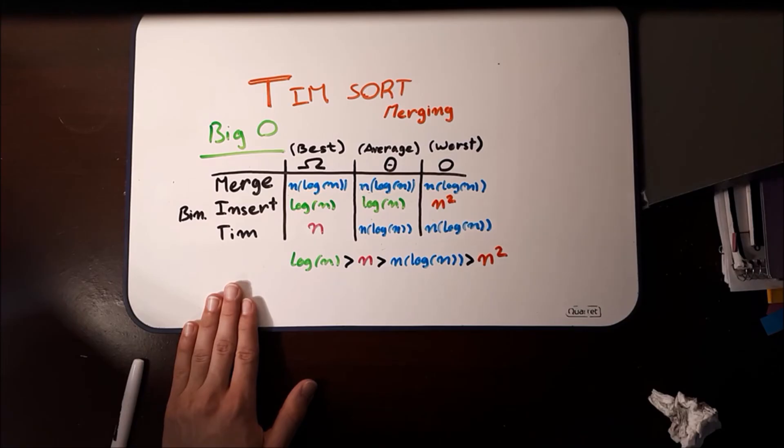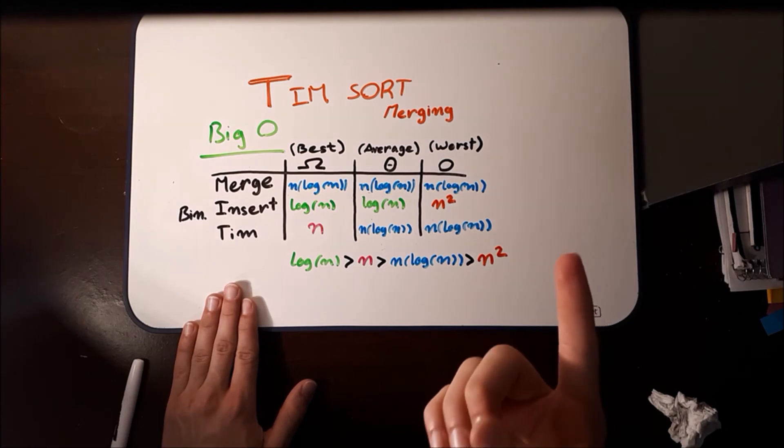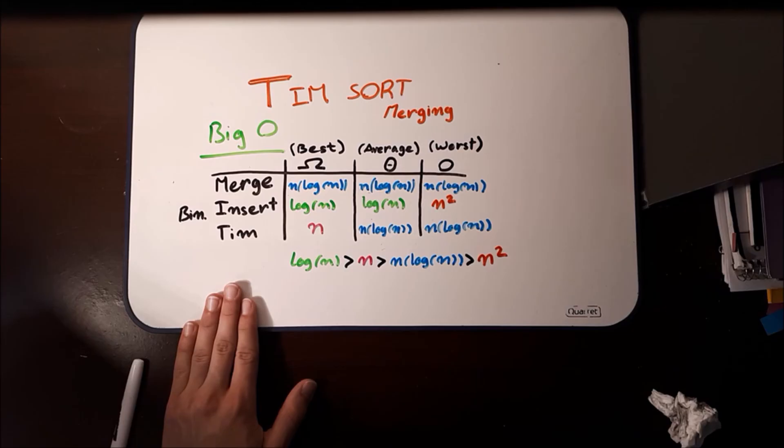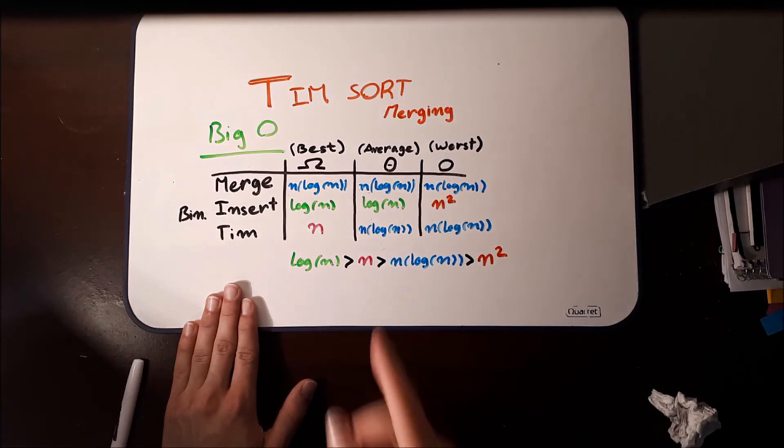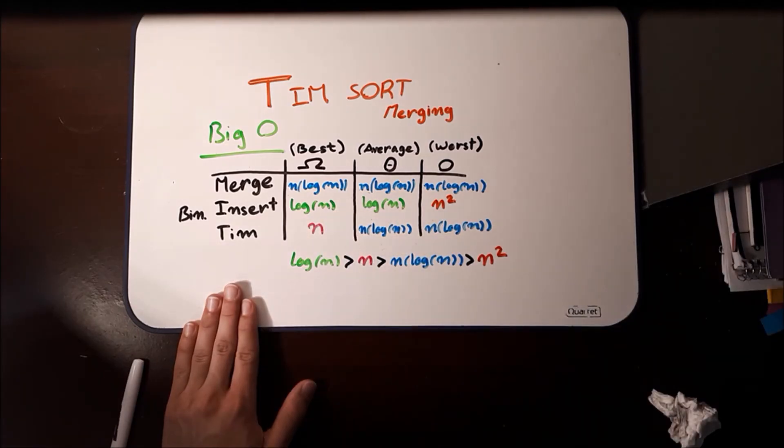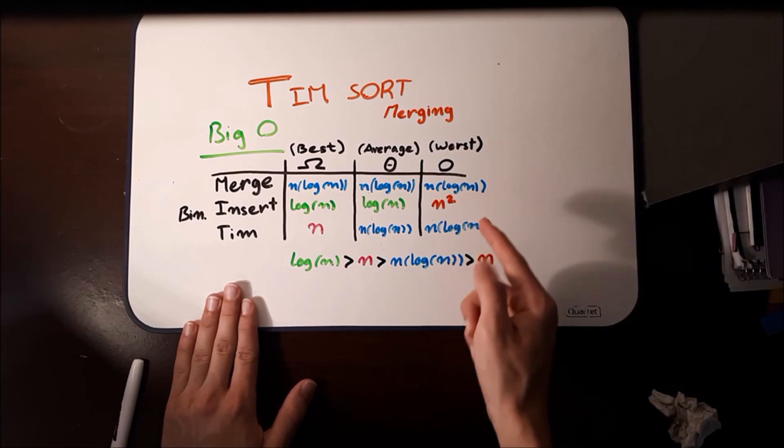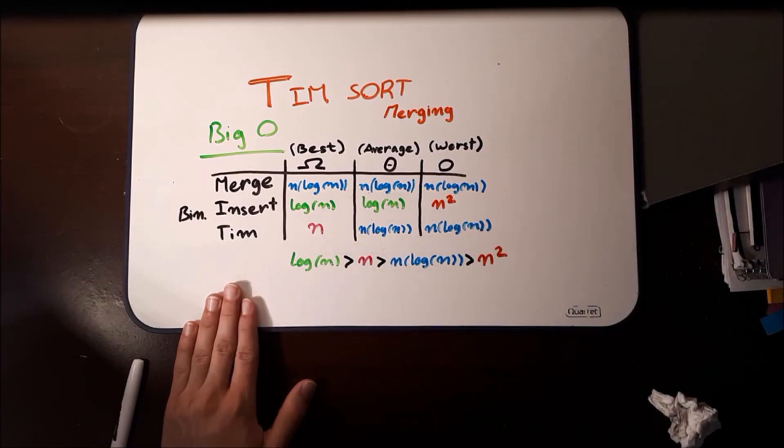Well, the difference is that TIMSORT incorporates merge sort and binary insertion sort very strategically. Remember, the first question that we asked with TIMSORT is whether the array has more than 64 elements in it. If it doesn't, then it uses binary insertion sort because it's just faster. After 64 elements, binary insertion sort gets really slow, so TIMSORT becomes faster.